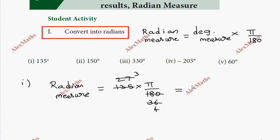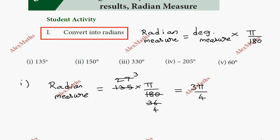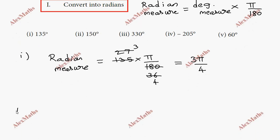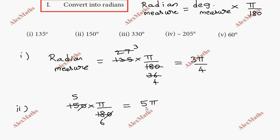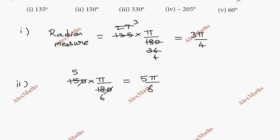For the second subdivision, 150 degrees. So 150 degrees into π/180. We cancel the zeros — 150 and 180 simplify. The answer is 5π/6. So 150 degrees equals 5π/6 radians.